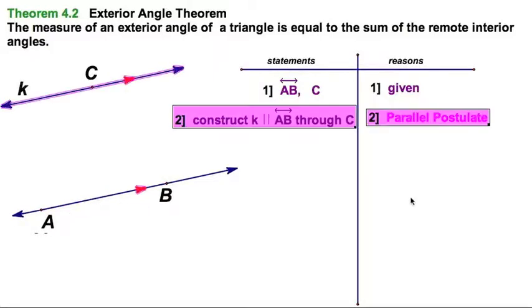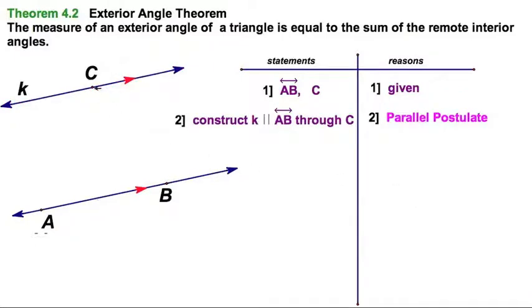And just like we did before, we know there's exactly one line parallel. That's a parallel postulate. Parallel to AB passing through C. And I'm going to call it K.